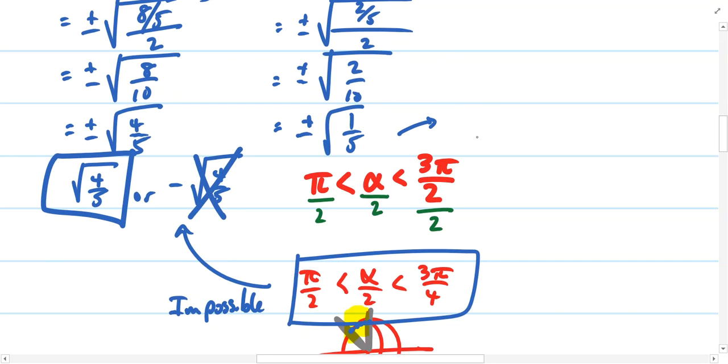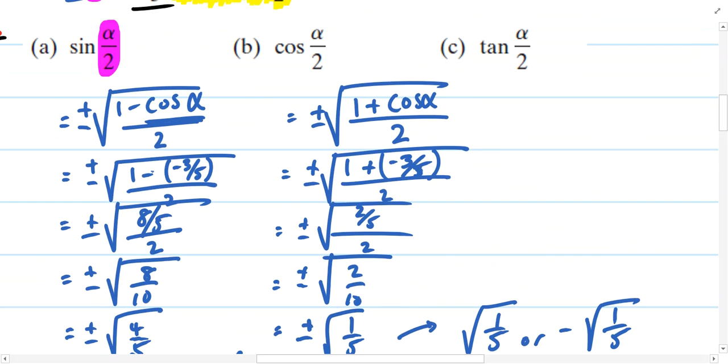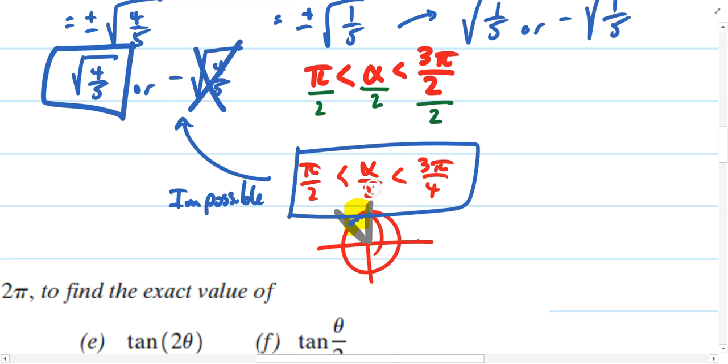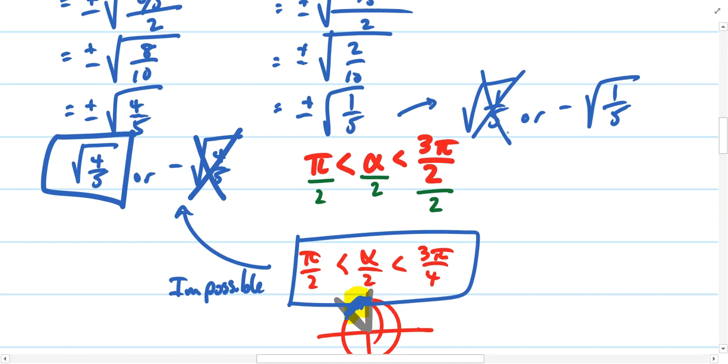So the question becomes, is our solution the square root of 1 fifth, or the opposite of the square root of 1 fifth? We're talking about cosine, and cosine requires an x value. We're thinking about alpha divided by 2, or half of some unknown angle measure alpha that has to exist somewhere between π over 2 and 3π over 4. We're talking about these coordinates in this region, and the coordinates in that region do not have a positive x value. This x coordinate is impossible, but this one's good to go.